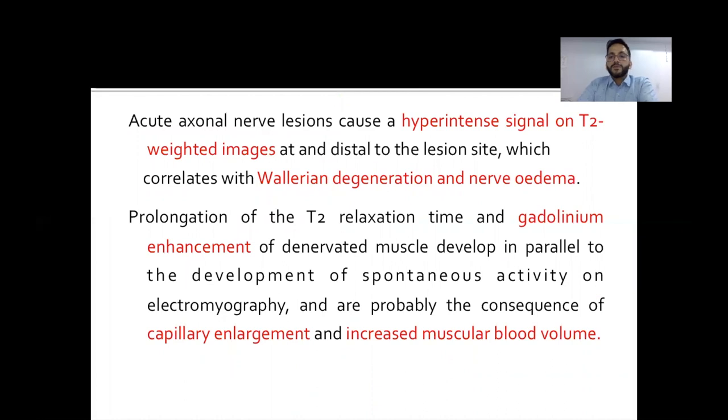The acute axonal nerve lesions cause a T2 hyperintense signal at a distal to lesion site. This correlates with Wallerian degeneration and nerve edema, prolongation of the T2 relaxation time and gadolinium enhancement of denervated muscle developed in parallel to the development of spontaneous activity on EMG. And these are the consequences of capillary enlargement and increased muscular blood volume.